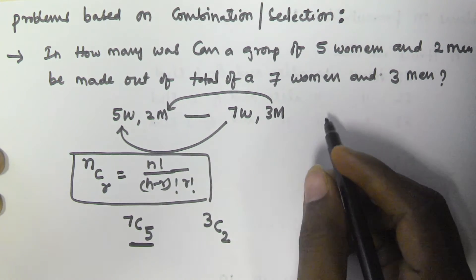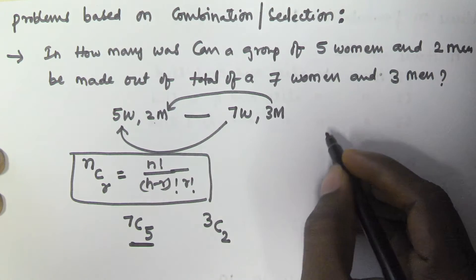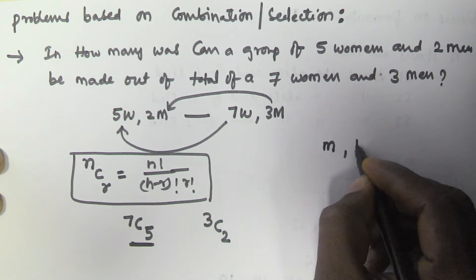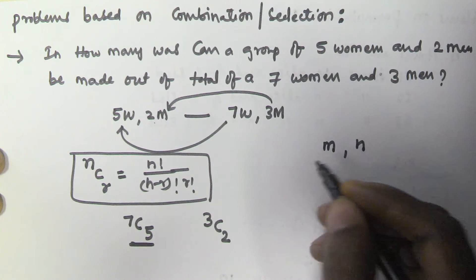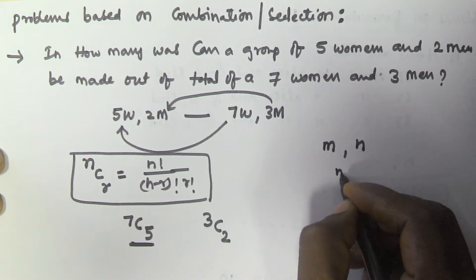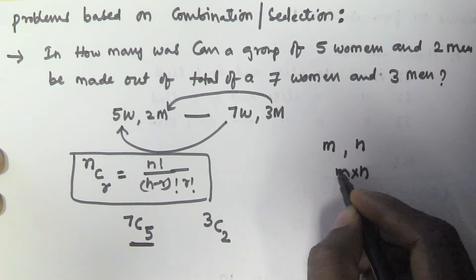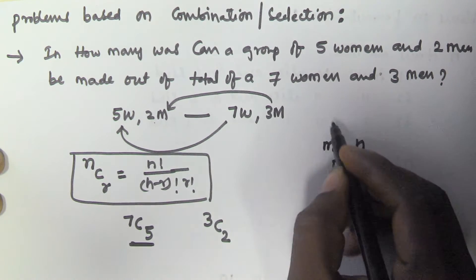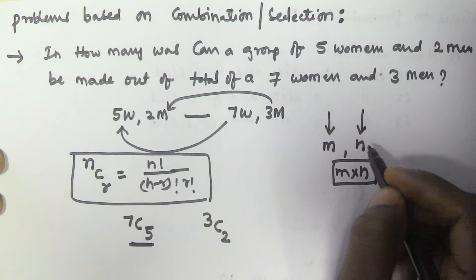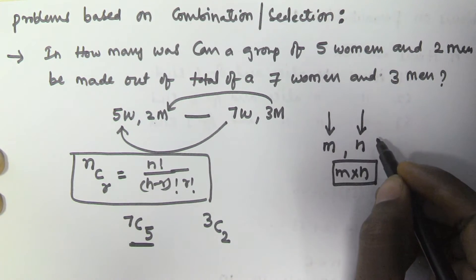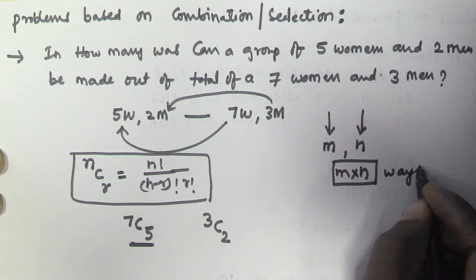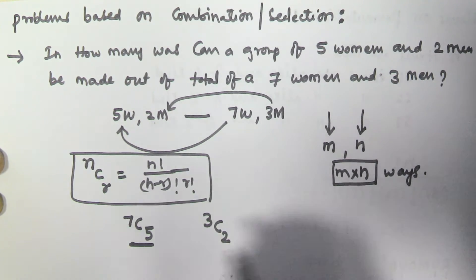In permutations and combinations, if the first work is done in m ways and the second work is done in n ways, then both works can be done together in m into n ways. We apply this multiplication rule here.